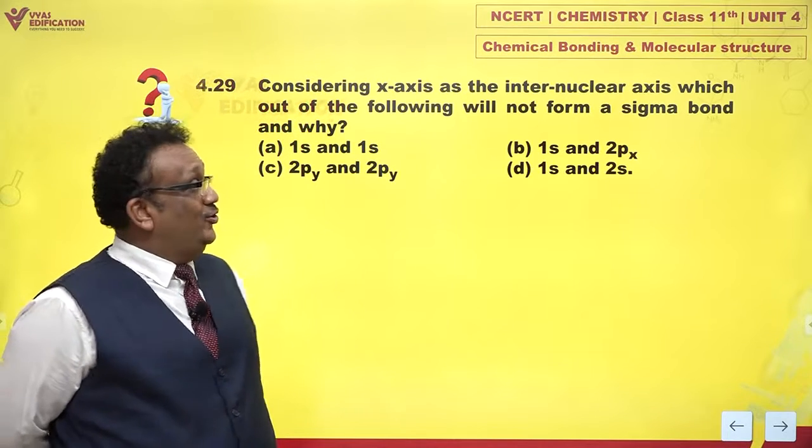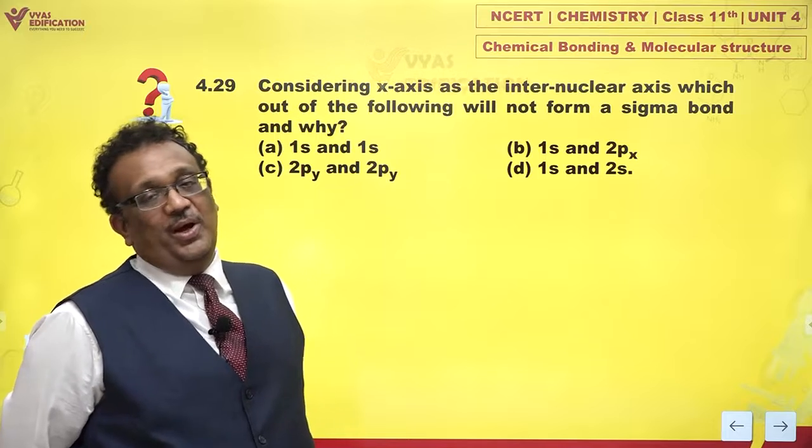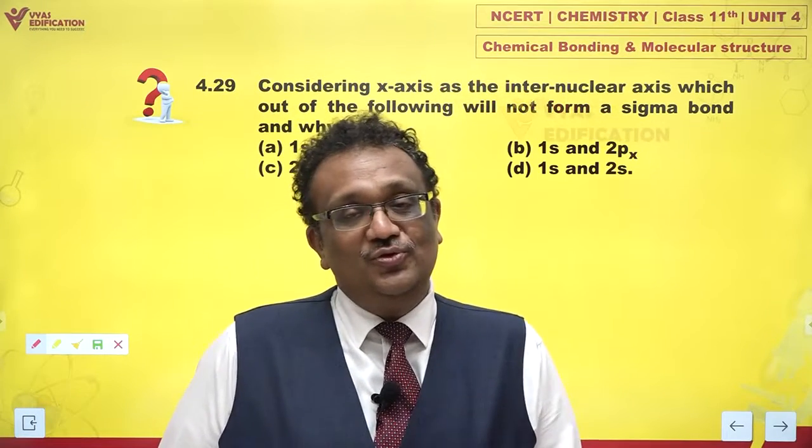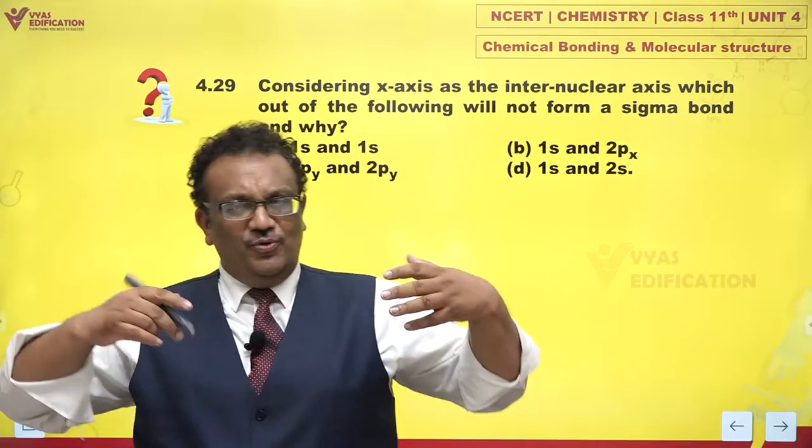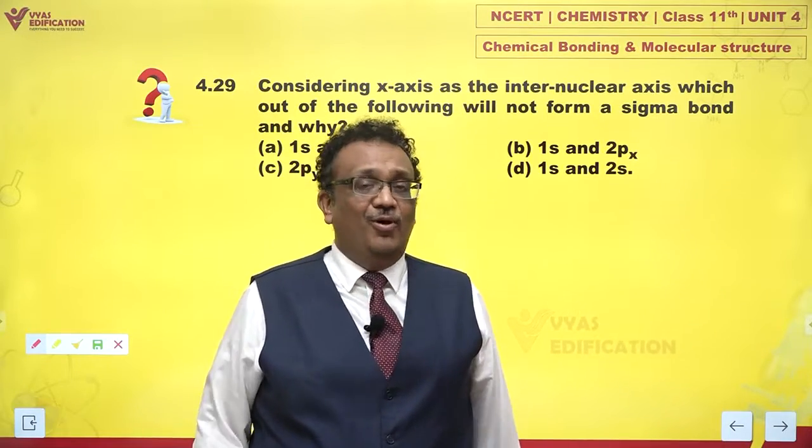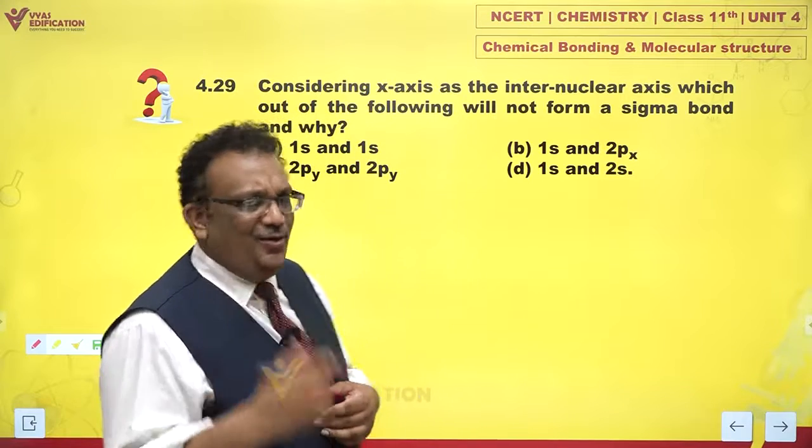Considering x-axis as the inter-nuclear axis, which of the following will not form a sigma bond and why? Now this is a beautiful and conceptual question. Why? Because it motivates you to visually imagine how exactly a bond is formed. Let's take a look.